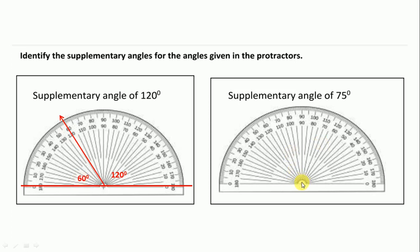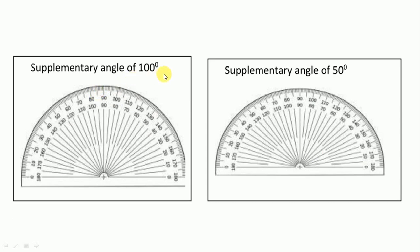We follow the same procedure. First we draw a 0 to 180 degree line and draw 75 degrees. This one is 75 degrees and its supplementary angle is 105 degrees — the total of 75 and 105 is 180 degrees.